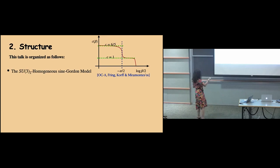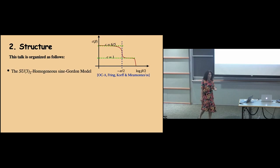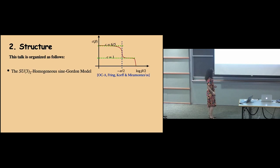A lot of things about these models were understood by that group in the 90s, including proving their integrability both classical and quantum, and computing an exact scattering matrix for the models — these are relativistic quantum field theories. The SU(3) level 2 is the simplest of that family. This model has the special feature of containing two stable particles which can fuse to produce an unstable one.